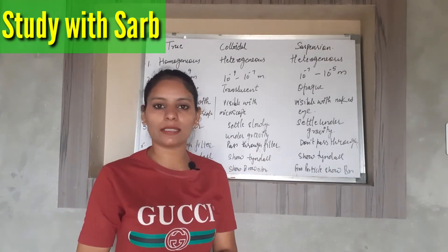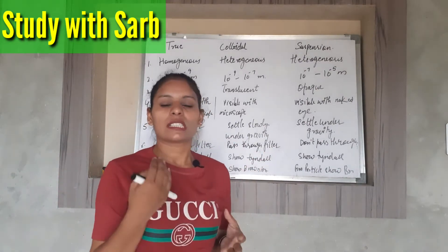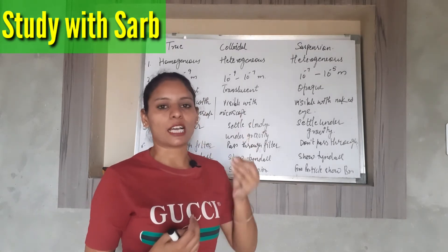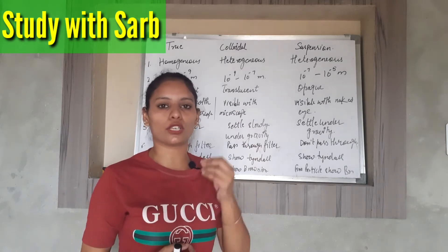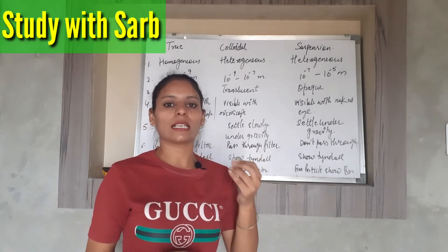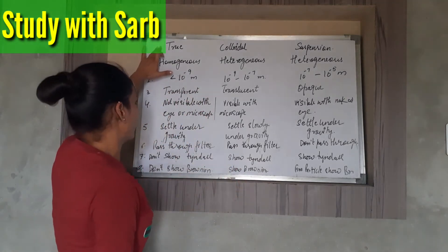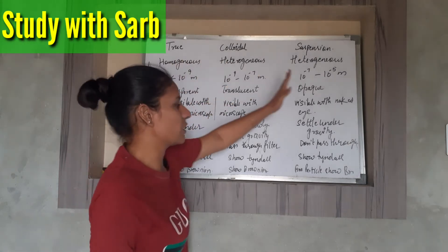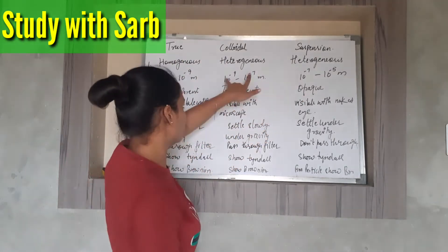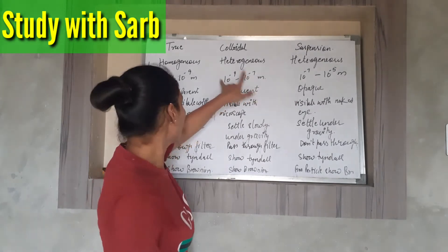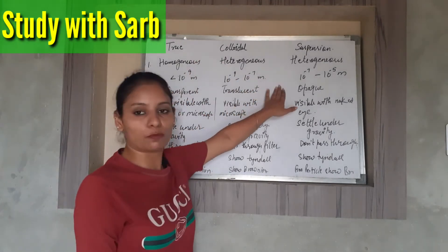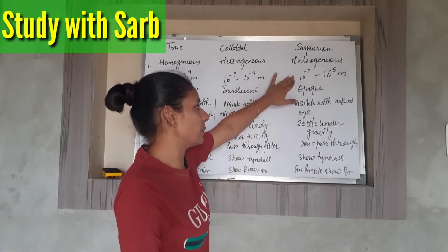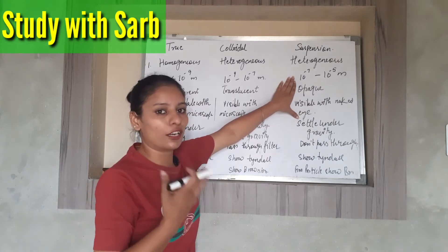These three solutions are basically differentiated first on the basis of solute particle size. The solute particle size in true solution is the smallest. In colloidal solution it is slightly larger than true solution but smaller than suspension — so colloidal particles are of intermediate size. Suspension particles are the largest.